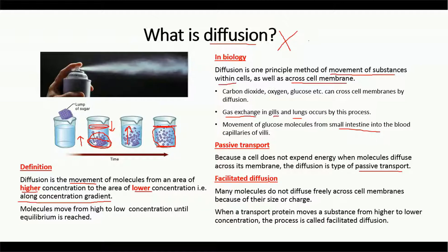In cells, along with simple diffusion, there is another type called facilitated diffusion. As the word 'facilitated' indicates, this kind of diffusion is helped. The helping molecules in this case are actually the transport proteins.